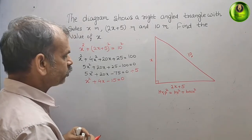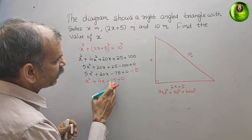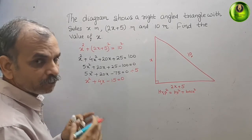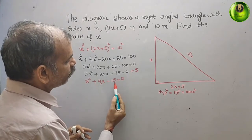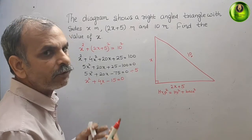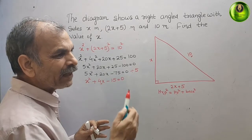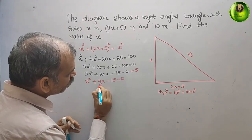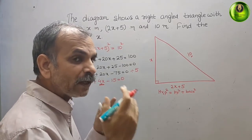Now, if we look at this, we need 4 as the middle term. For middle term splitting, we need two numbers whose product is 15. That would be 3 and 5, but 5 minus 3 is 2, not 4. Therefore, we will go for the completing the square method only.